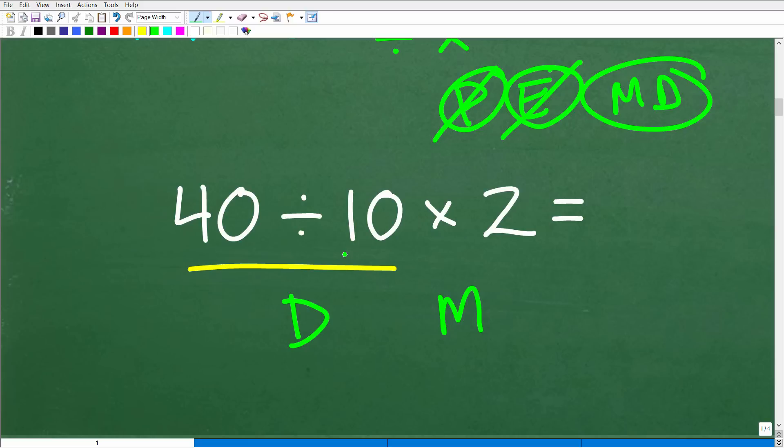So now the rest of this problem is going to be basic arithmetic. 40 divided by 10 times two, pretty straightforward. So let's go ahead and take the next step to solve this basic problem.